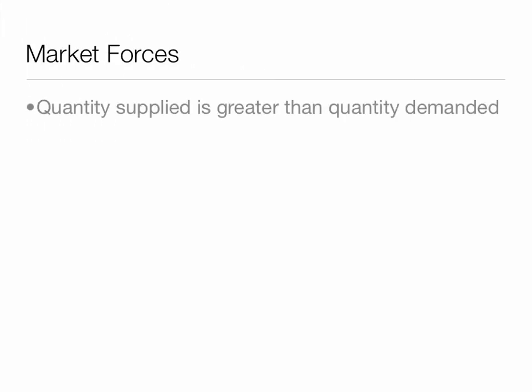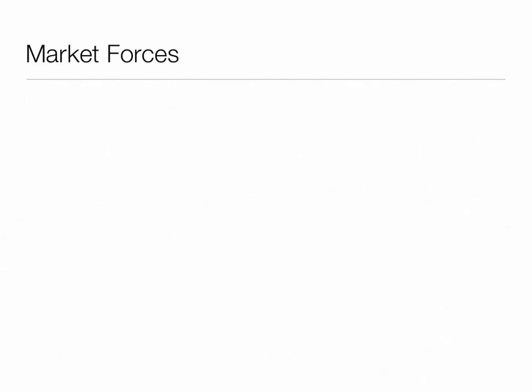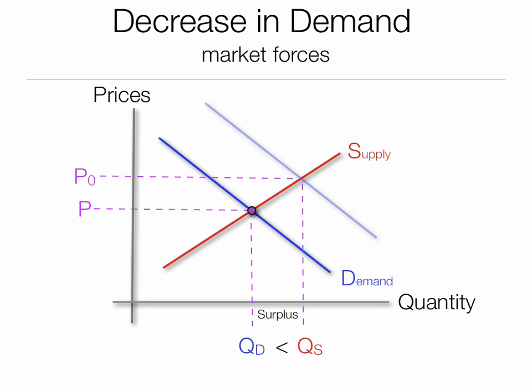There are market forces at work here — quantity supplied is greater than quantity demanded, so inventory levels begin to rise. Suppliers have too much, a surplus of the product, and are forced to lower prices. Shown graphically on the same graph as before: quantity supplied is greater than quantity demanded, meaning suppliers who do not reduce prices will have excess inventory — a surplus.